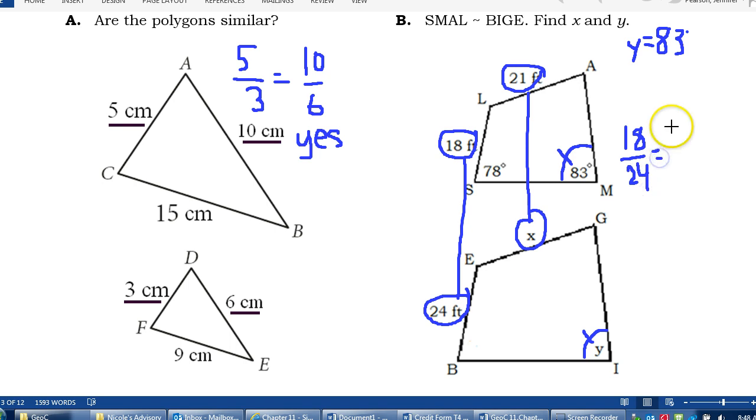Then I can cross multiply and divide. If I do 21 times 24, and then divide that by 18, I get x is 28 feet.